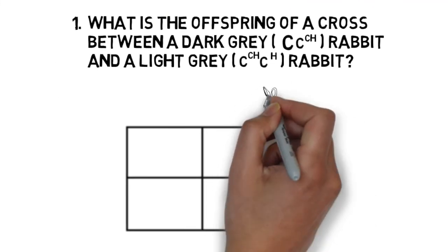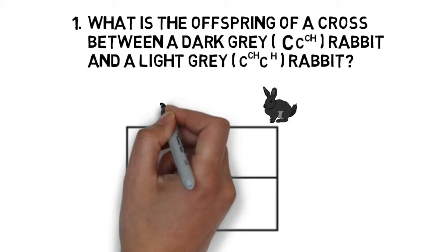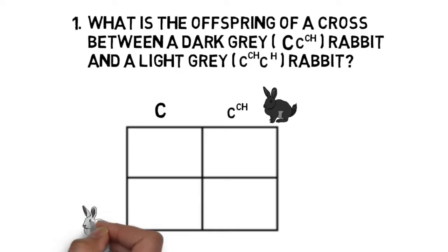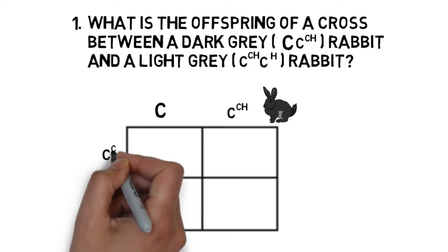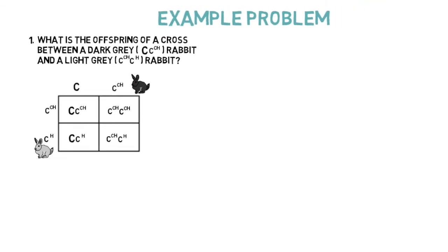Our first parent is a dark gray rabbit with a genotype capital C, lowercase cch. Our second parent is a light gray rabbit with a genotype lowercase cch, lowercase ch. Now that we have the Punnett square set up, we just plug in the answers.